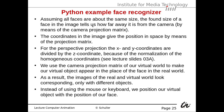We can now assume all faces are about the same size. The apparent size of a face in the image tells us how far away it is from the camera by means of the camera projection matrix. The projection matrix gives us the connection to our world coordinates. The coordinates in the image give the position in space by means of the projection matrix. For the perspective projection, the X and Y coordinates are divided by the Z coordinate — we divide by Z because of the normalization of homogeneous coordinates, as covered in slides 3a.